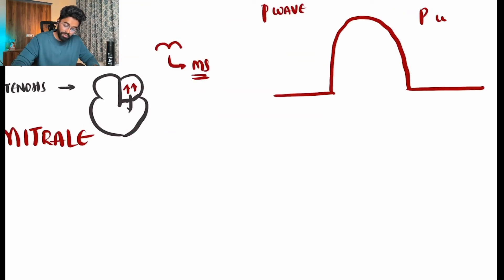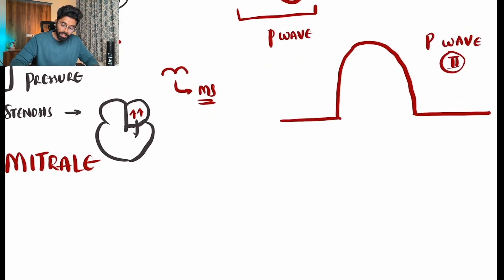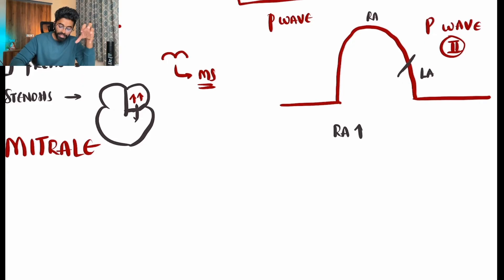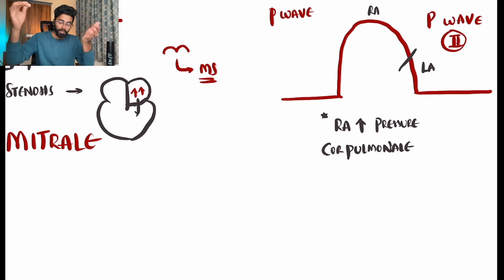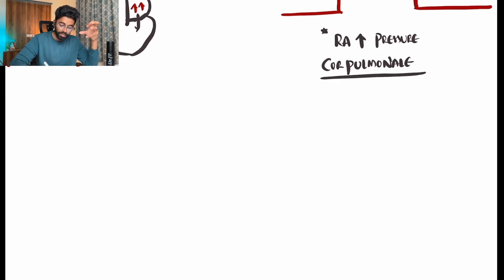In mitral stenosis, increased left atrial pressure produces a broad, bifid P wave in Lead II that looks like an 'M' — this is called P mitrale. Conversely, if the right atrial part of the P wave becomes very tall in Lead II, it indicates increased right atrial pressure — a common condition being cor pulmonale. Increased pulmonary pressure raises right ventricular pressure, which backs up into the right atrium, producing a tall P wave called P pulmonale.